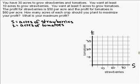I've established variables S for the number of acres of strawberries and T for the number of acres of tomatoes, and my goal is to translate the information they gave me into mathematical statements so that I can make better sense of them.